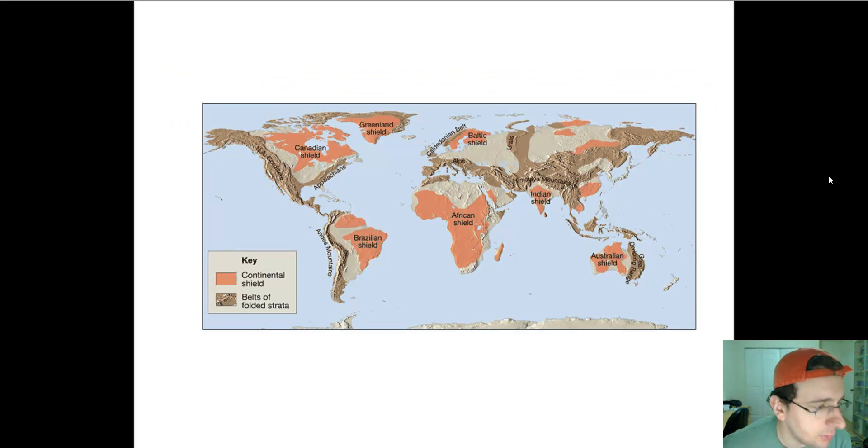In this picture, you see the representation of what is a shield and also what is folded strata, which we'll call orogens. So you notice that the pieces marked in tan or salmon were original shields that were around since the very beginning of the first continents. You have the Greenland shield, the Canadian shield, the Brazilian shield, the African shield, the Australian shield, Indian shield, and the Baltic shield.